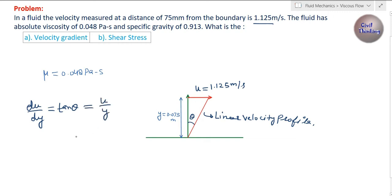Tan theta is perpendicular, which is u, divided by base, which is y, which equals u divided by y, which equals 1.125 meters per second divided by 0.075 meters. Meter and meter cancel out, so we are left with per second only, which is 15 per second.